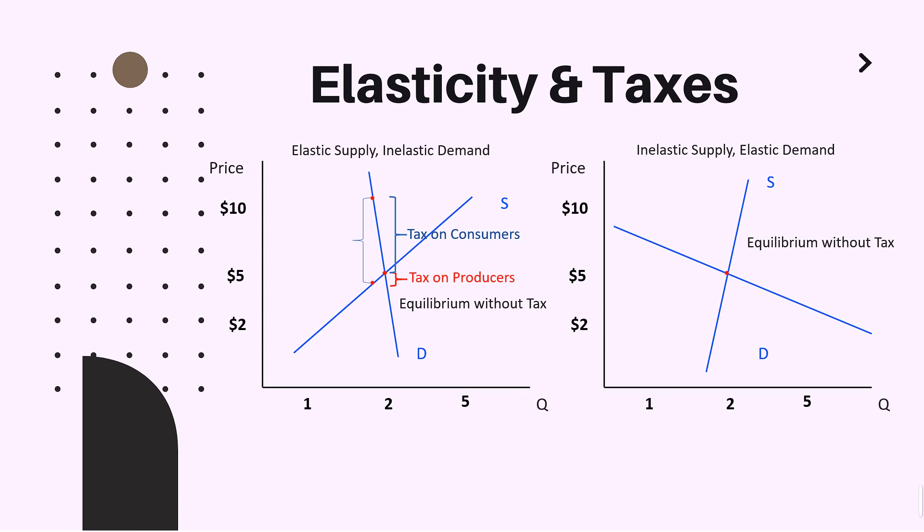Let us also discuss the second situation: inelastic supply and elastic demand. With a certain tax regulation, there is an increase in price, but as you can see, the upper part representing the tax burden on consumers is much lower than the part representing the tax burden on producers. The conclusion is that in the case of inelastic supply and elastic demand, the tax falls more heavily on the producer side. To sum up both situations: the more inelastic the market force — namely supply or demand — the higher the tax burden that force will share in the market.